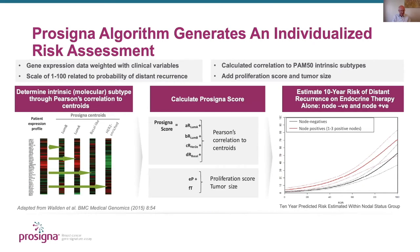The test consists of 50 genes, the PAM50 so-called, and this firstly compares the gene expression of those 50 genes with what are called centroids — the archetypal intrinsic subgroups: luminal A, luminal B, basal-like, and HER2-enriched. It determines how close a particular profile is to any one of those types. The score is then composed of the correlation of that unknown with each of those centroids, plus a proliferation score, and tumor size, to give an overall score.